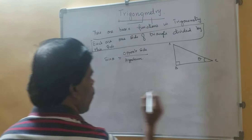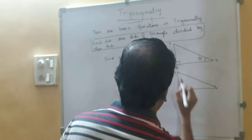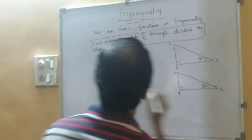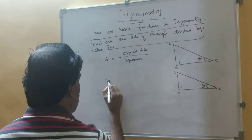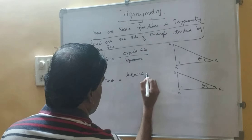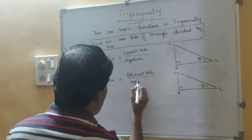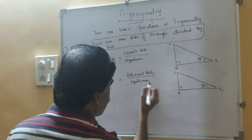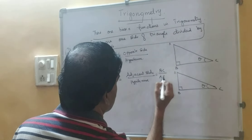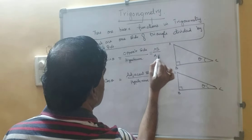The second ratio: cos theta equals adjacent side upon hypotenuse. Here the adjacent side is BC and the hypotenuse is AC, so cos theta equals BC upon AC.